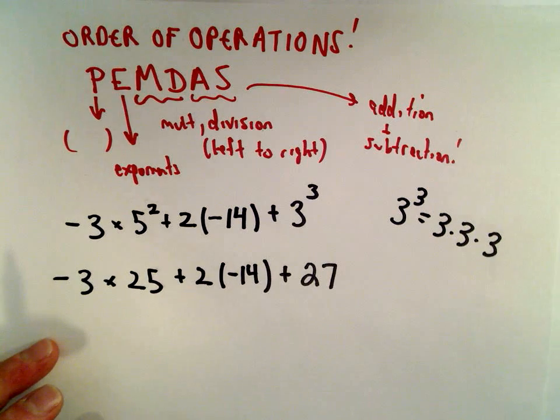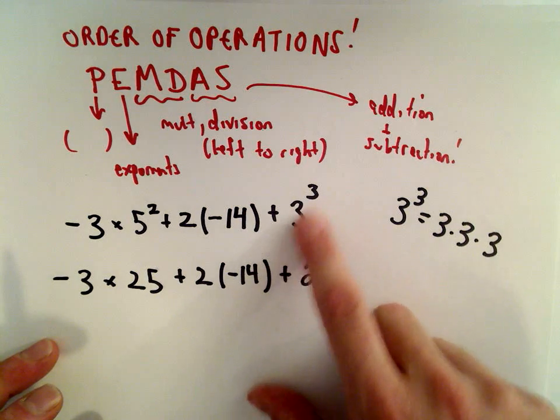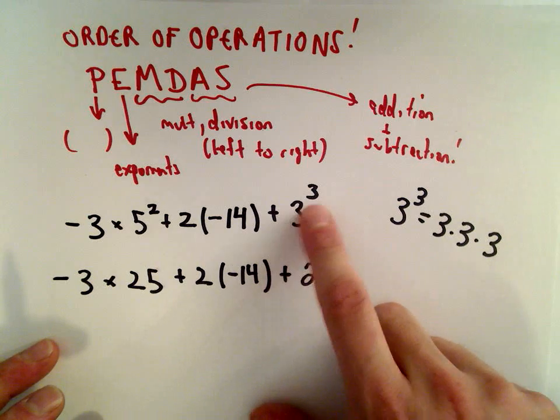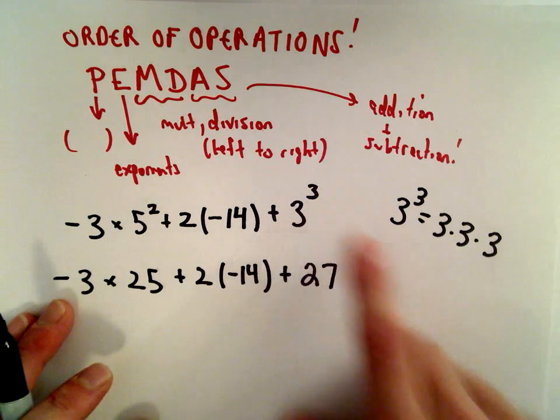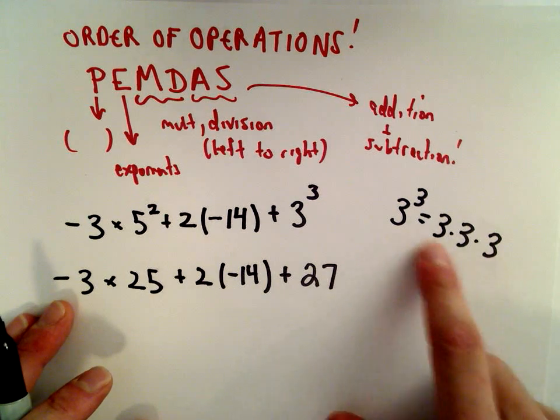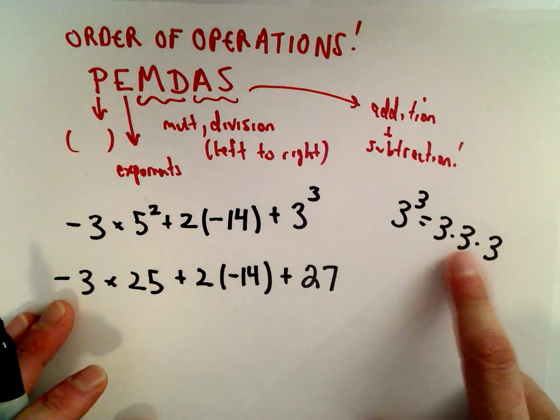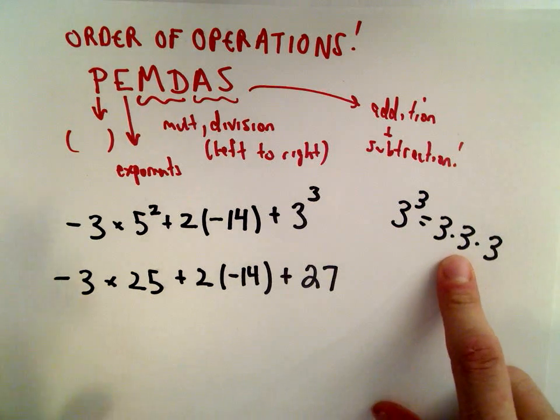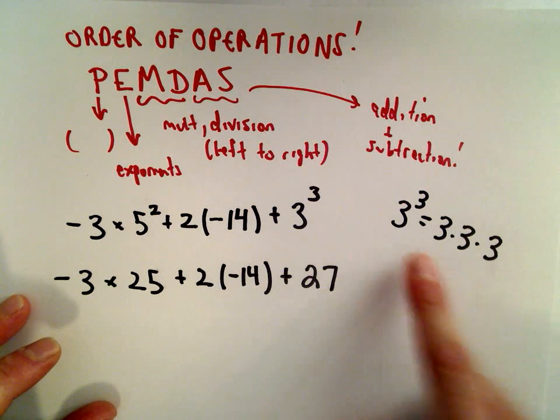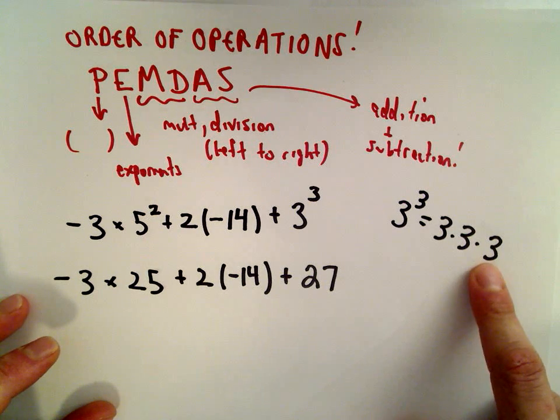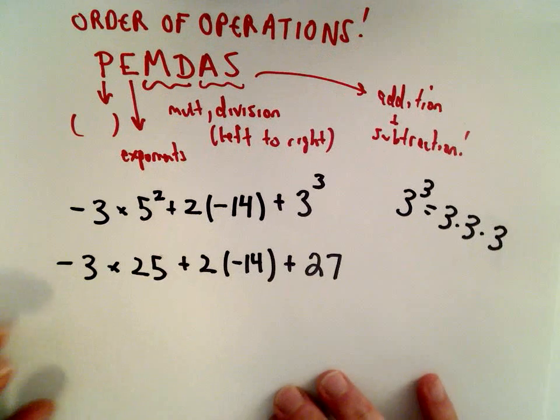A common mistake I've seen: people will say 3 to the third, oh that's 9, because they're thinking 3 multiplied by 3, but that's not correct. It means we have three threes. If this is something that you tend to make a mistake on, write it out. Do it a little slower, and that way hopefully you'll get the correct answer.